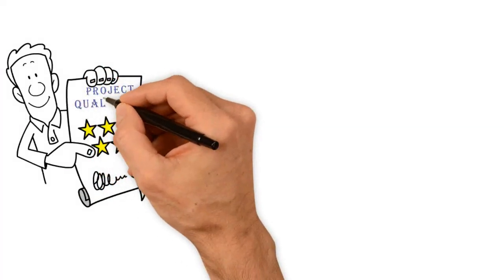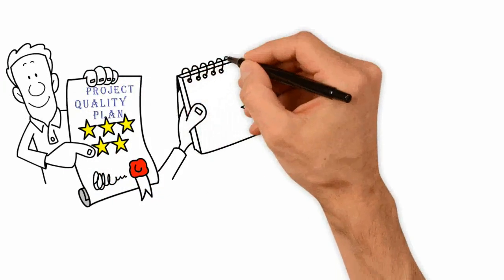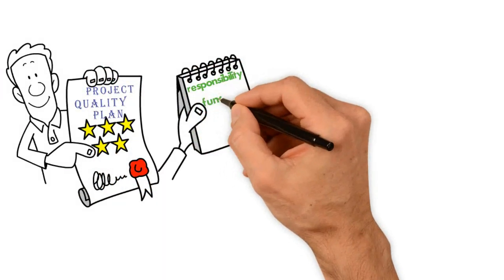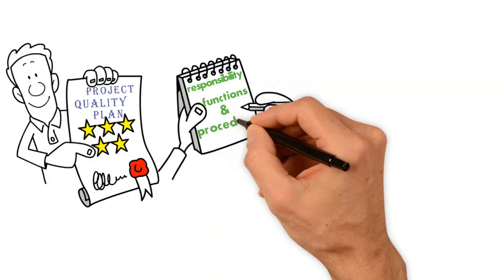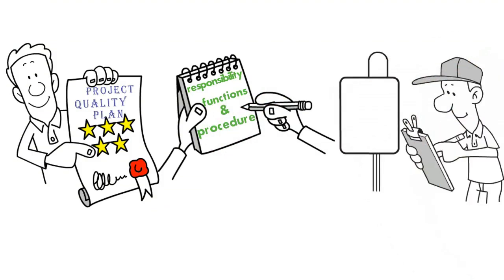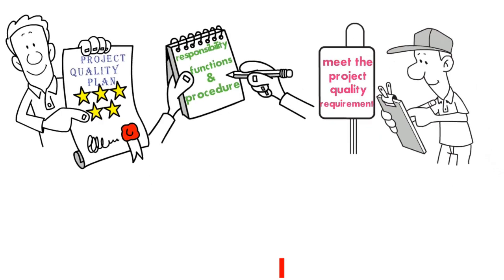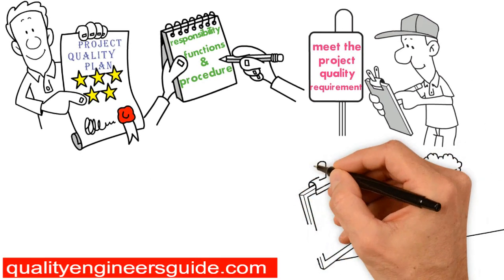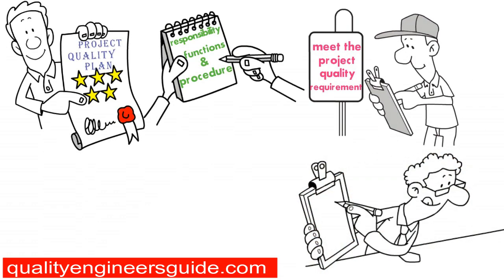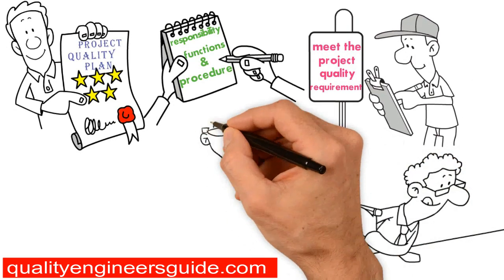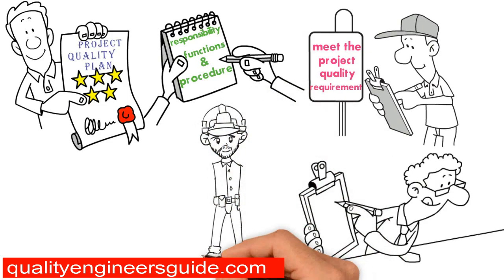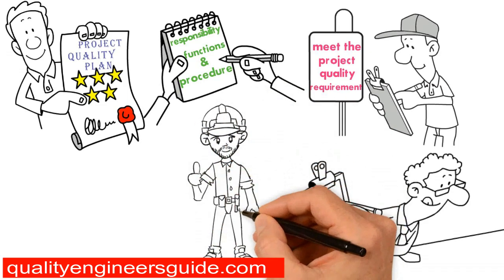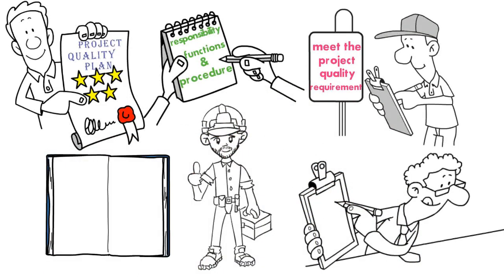Project Quality Plan. A plan that describes the responsibilities, functions, and procedures to be followed in a project to meet the project's quality control requirements. The Project Quality Plan shall be made by the quality manager of the project, and it shall be submitted to the engineers for approval before the commencement of any activity on site. It is a guidebook of a project.